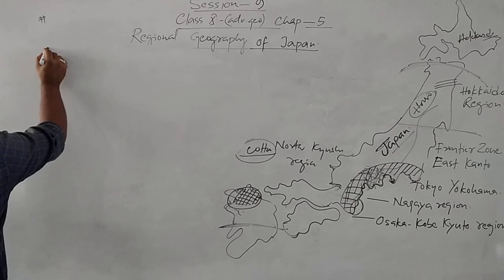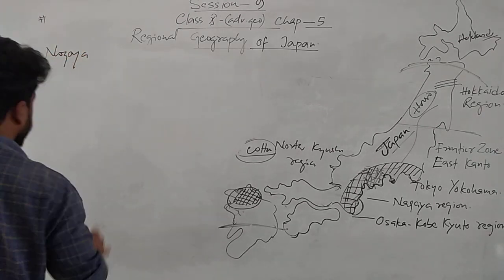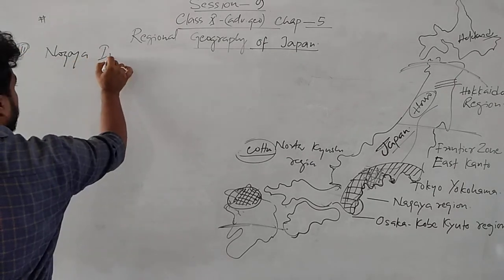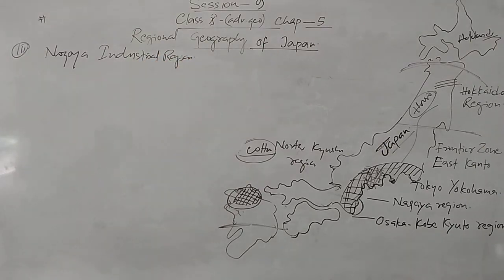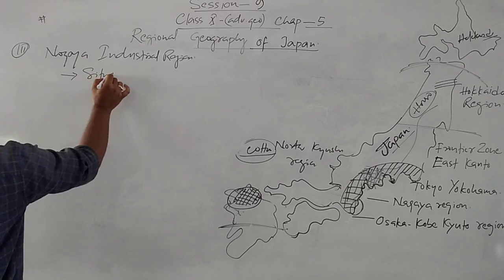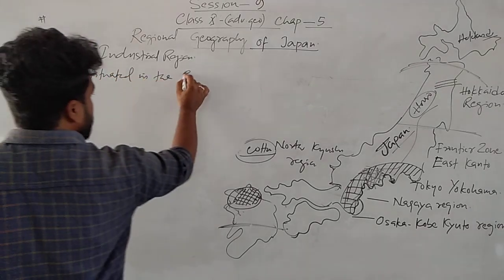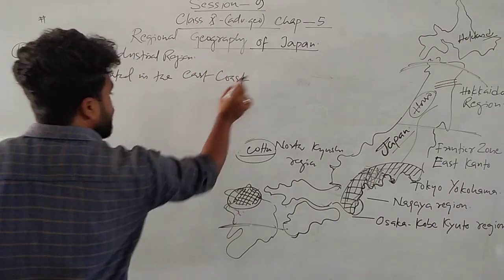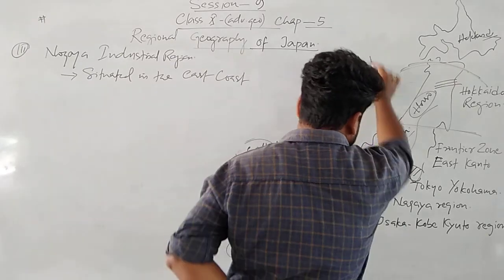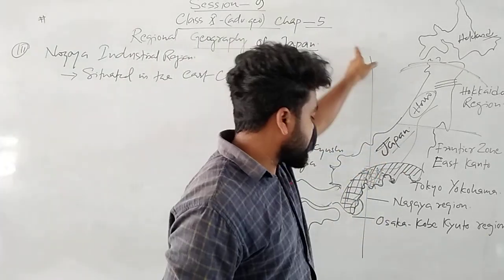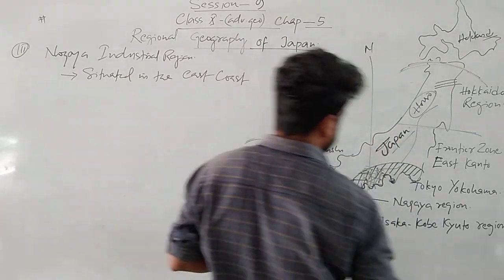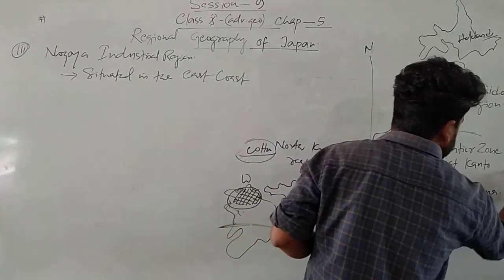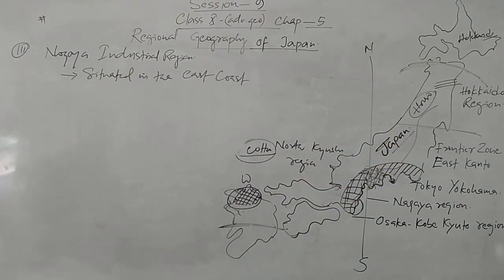Now let's discuss the Nagoya industrial region. The Nagoya industrial region is situated on the east coast — specifically the east coast of Honshu island. Do not confuse the islands: Hokkaido, Honshu, Shikoku, and Kyushu. The Nagoya region is on the eastern side, facing the Pacific coast of Honshu.